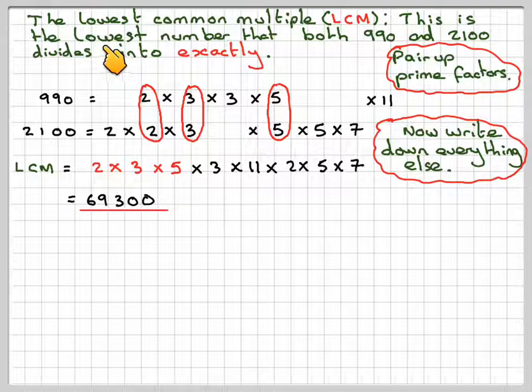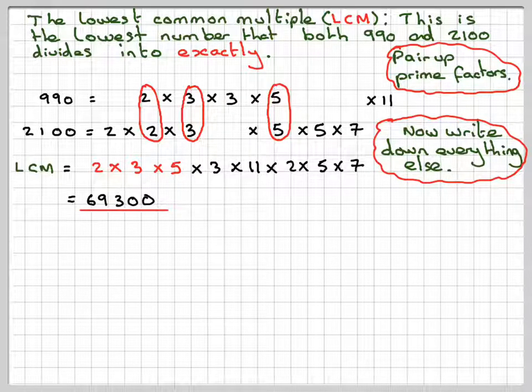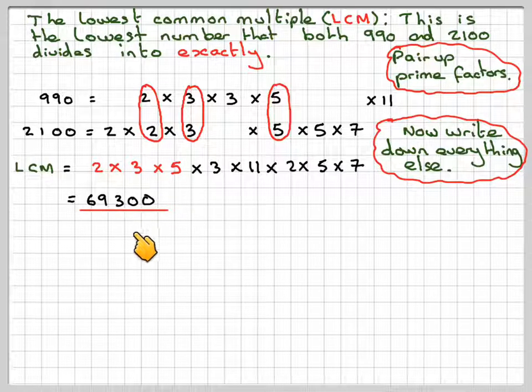What we're saying is that... let me correct myself. That should be the lowest number which both 990 and 2,100 divide into. So the lowest number that 990 and 2,100 divide into is 69,300. That's the problem done.